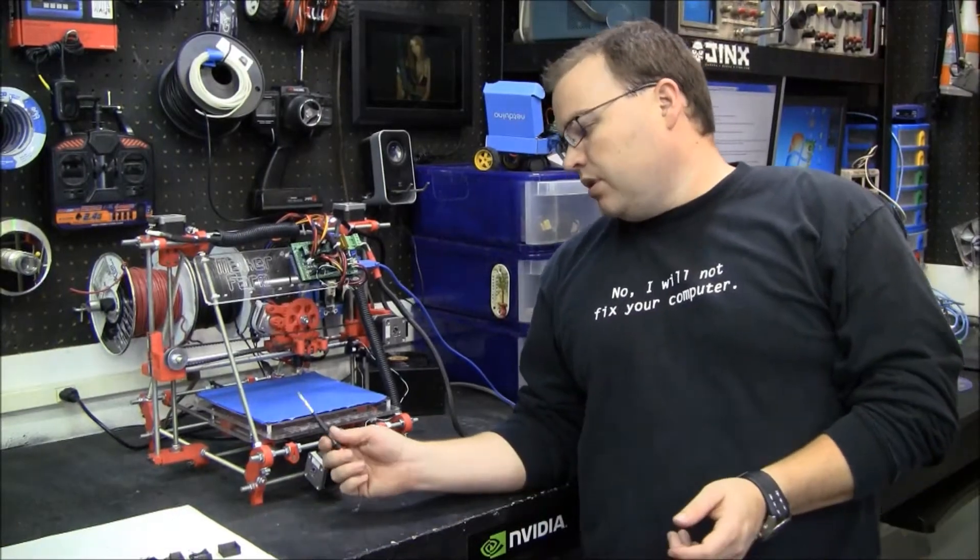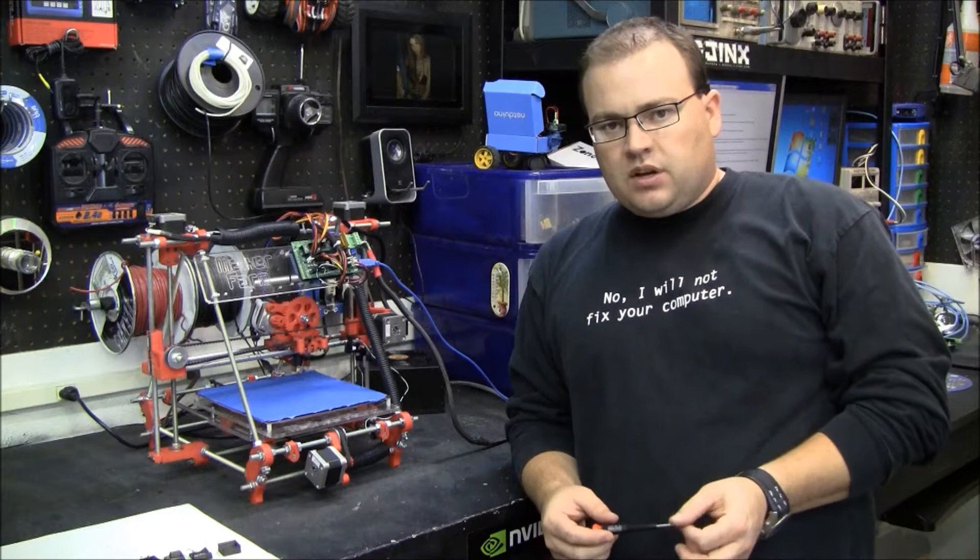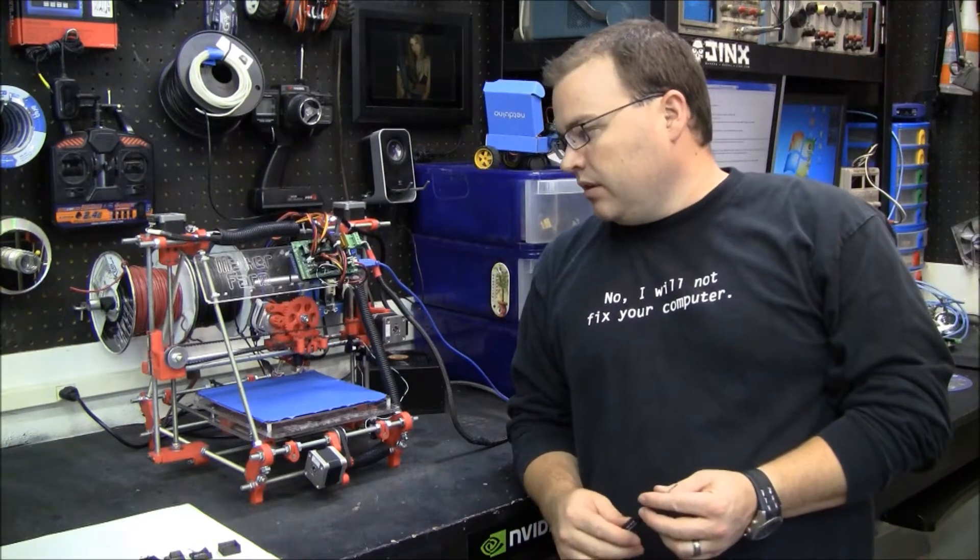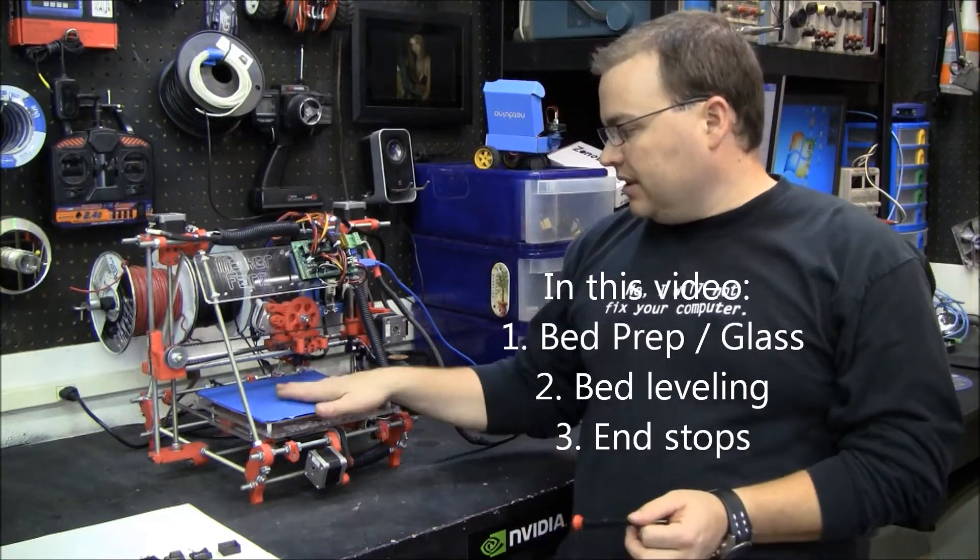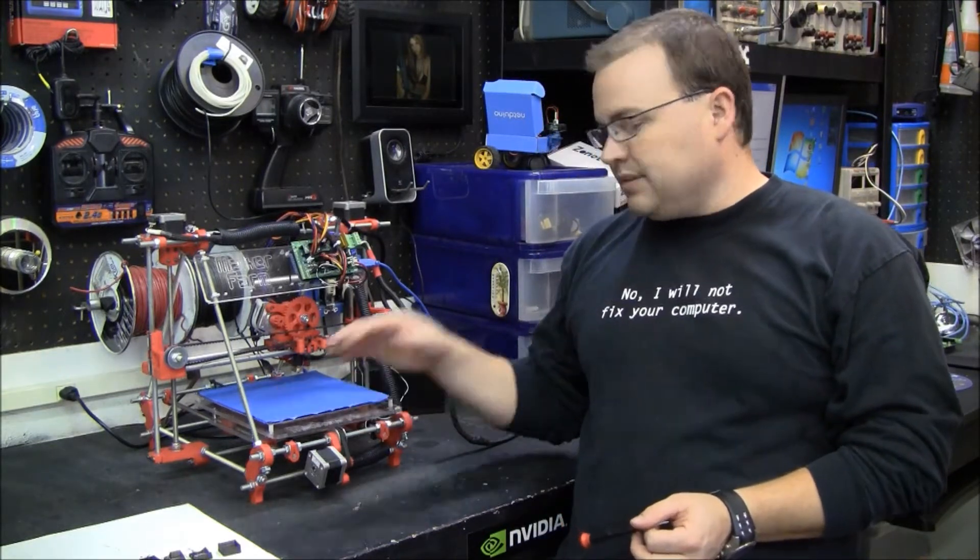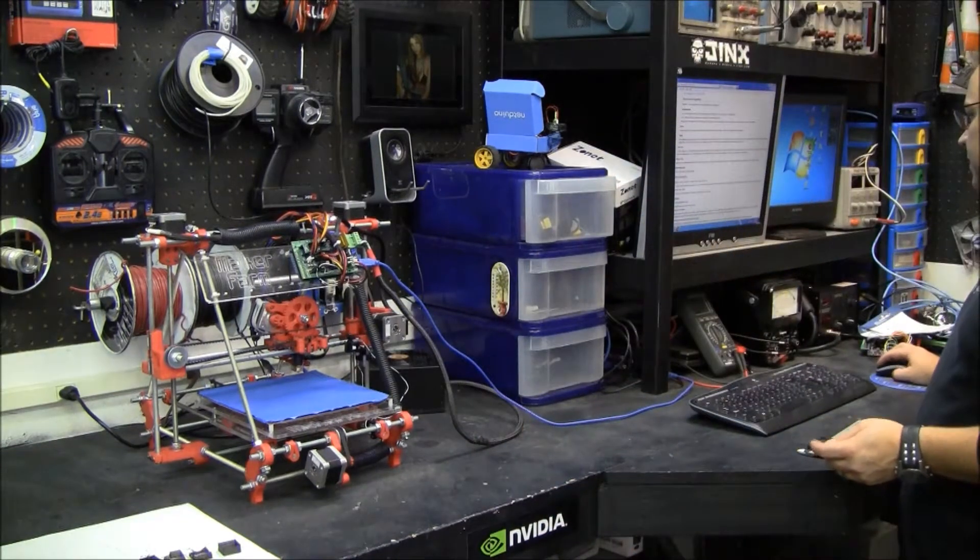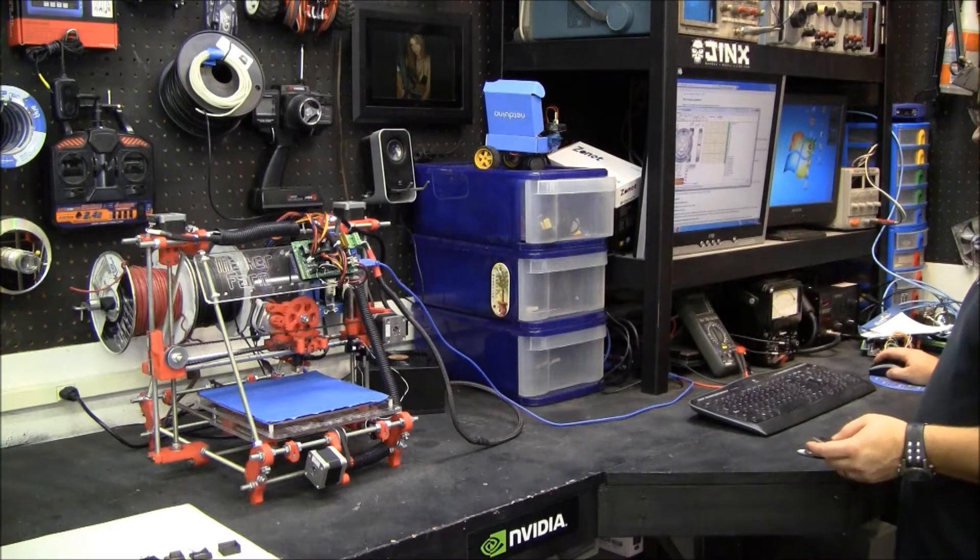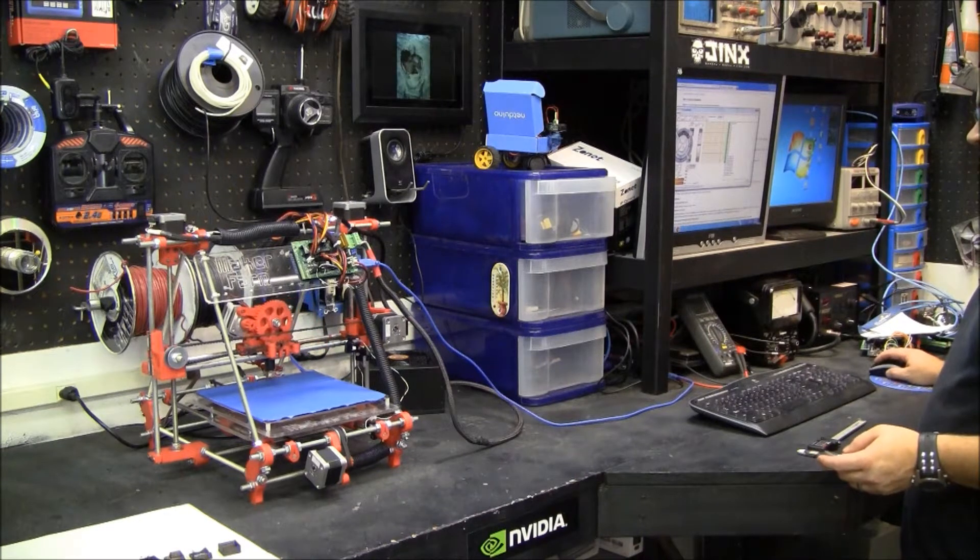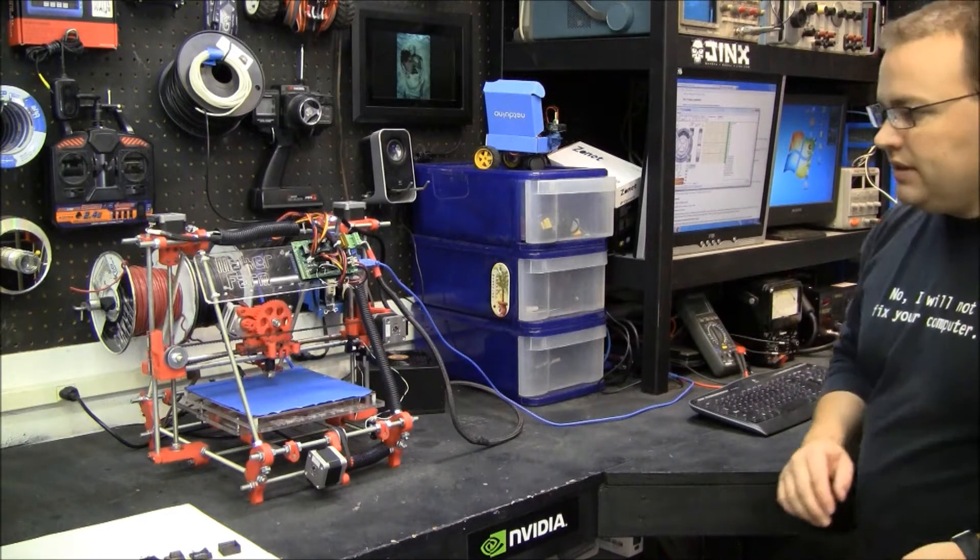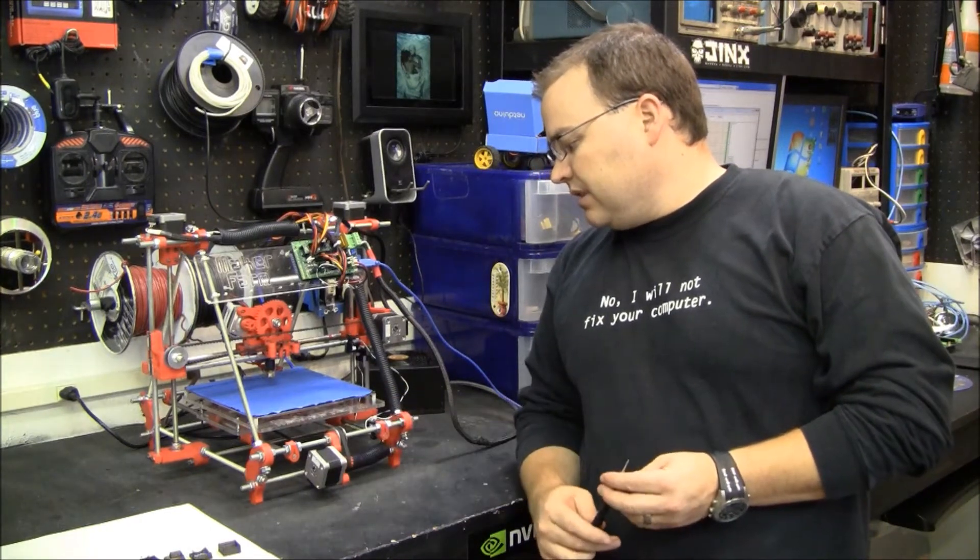After you have your RepRap all put together, you're going to have to go through quite a procedure to calibrate it and get it set up properly for printing. At this point, I'm going to assume that you've been able to actuate your steppers using the software. If we connect here and we can jog, we're pretty much set up, so we need to start by leveling this bed.